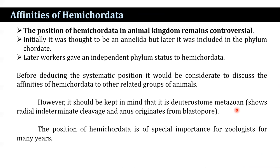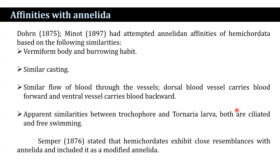Before deducing the systematic position, we consider affinities of Hemichordata to other related groups. It is important to note that it is deuterostome Metazoa — showing radial indeterminate cleavage, and the anus originates from the blastopore. Dohrn (1875) and Minot (1897) attempted to establish annelid affinities of Hemichordata based on similarities such as worm-like body and burrowing habit, similar casting, and similar flow of blood through the vessels — dorsal blood vessels carrying blood forward and ventral vessels carrying blood backward.